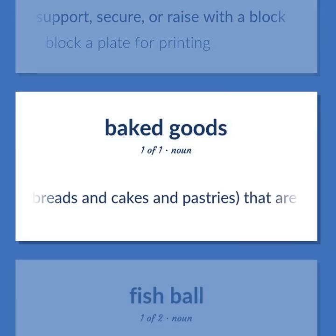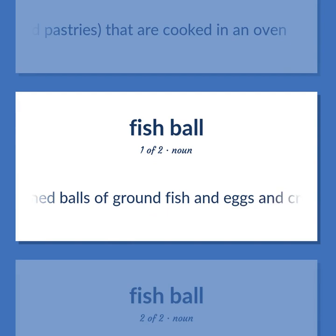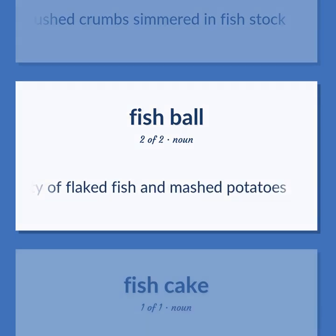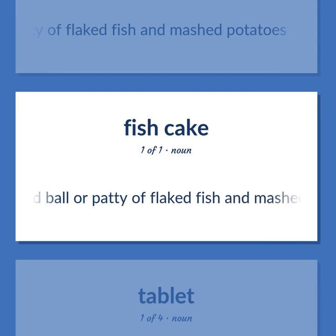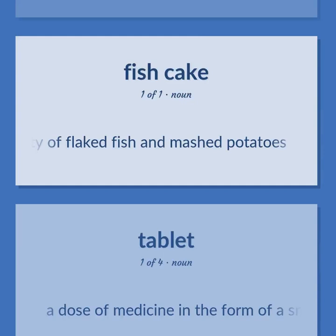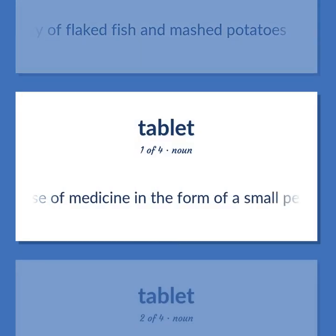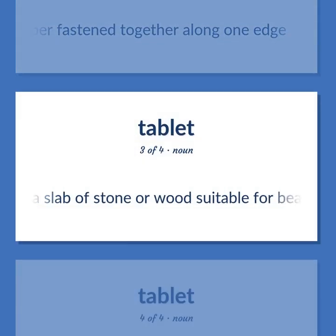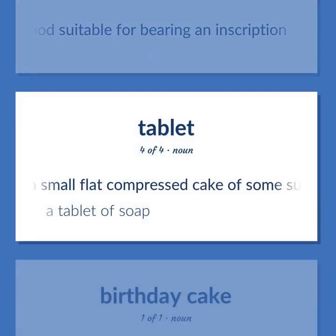Foods, like breads and cakes and pastries, that are cooked in an oven. Well-seasoned balls of ground fish and eggs and crushed crumbs simmered in fish stock. A fried ball or patty of flaked fish and mashed potatoes. A dose of medicine in the form of a small pellet. A number of sheets of paper fastened together along one edge. A slab of stone or wood suitable for bearing an inscription. A small flat compressed cake of some substance — a tablet of soap.